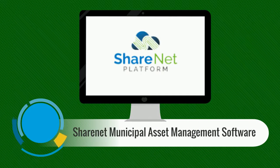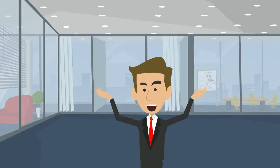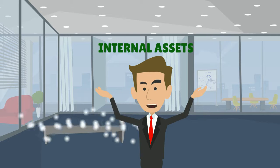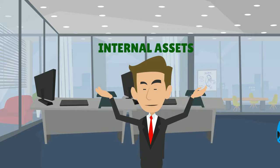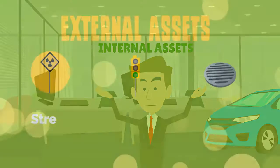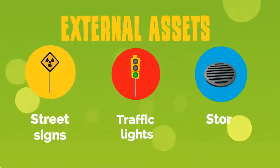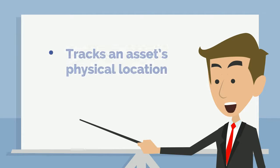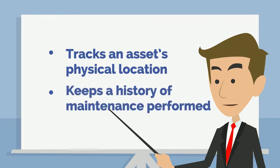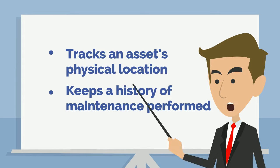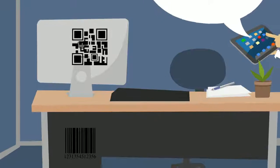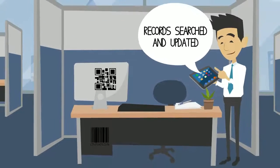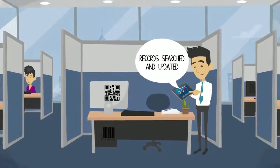Finally, let's take a look at the ShareNet Municipal Asset Management software. Your city assets need to be tracked and maintained properly. This includes internal assets such as computers, furniture, and vehicles, as well as external assets such as street signs, traffic lights, and storm drains. ShareNet not only tracks an asset's physical location, but also keeps a history of maintenance performed. Assets can be barcode tagged, allowing records to be searched and updated on the spot.